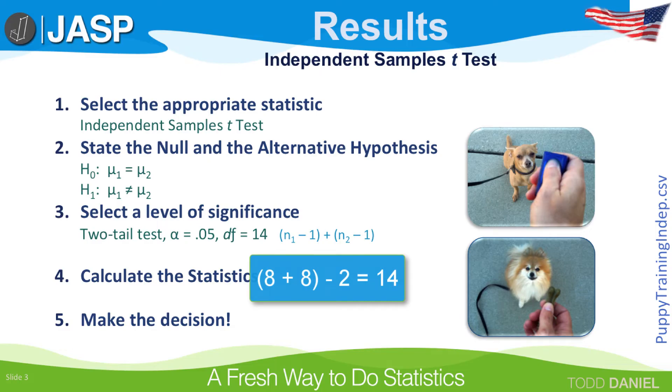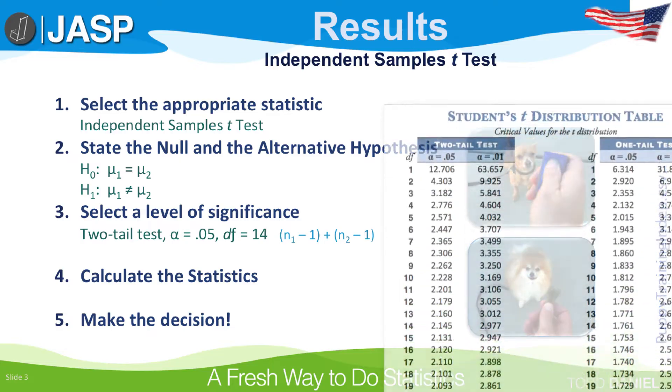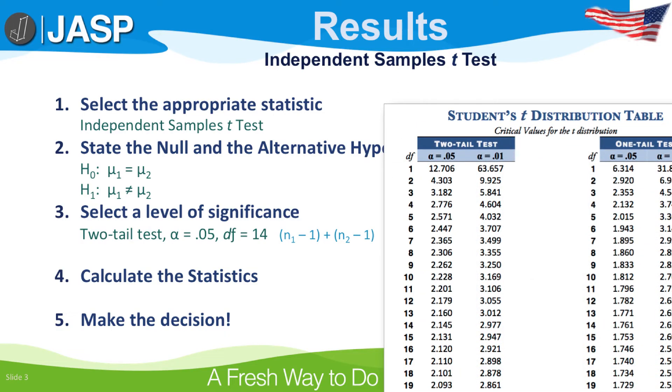Group 1 has 8 puppies. Group 2 has 8 puppies. So together, they have 16 puppies. Minus 2 is 14. The critical value for a two-tailed test, alpha of 0.05, 14 degrees of freedom, is positive or negative 2.145. Any t-values exceeding 2.145 indicate that the sample of puppies being trained with clicker training was statistically significantly different than the puppies being trained with food reward training.